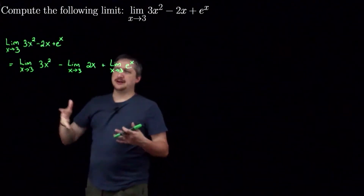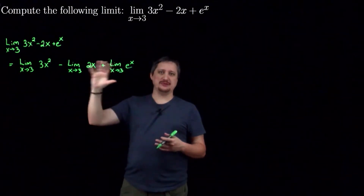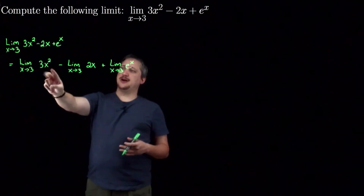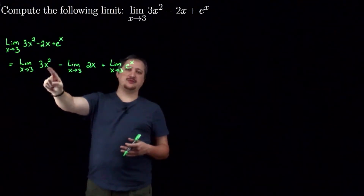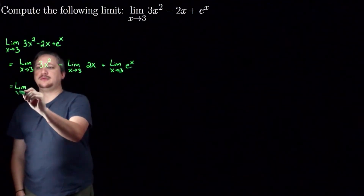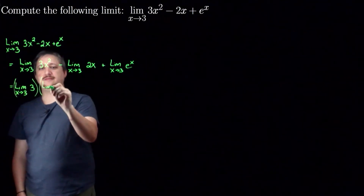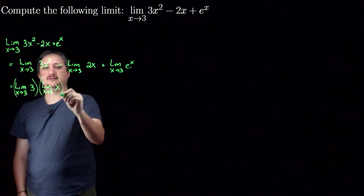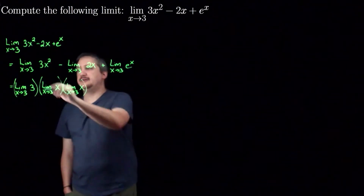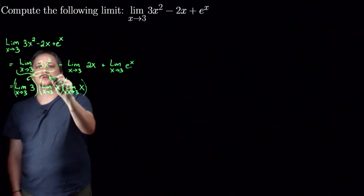I'm doing this in an agonizing level of detail — in your own work you don't necessarily have to show all these steps, but I want to make clear how this is working. Here I could take the first term and separate the 3 and the x, and I could also think of x squared as x times x and separate that as well. So this becomes the limit as x goes to 3 of 3, times the limit as x goes to 3 of x, times the limit as x goes to 3 of x — separating this out into three pieces.